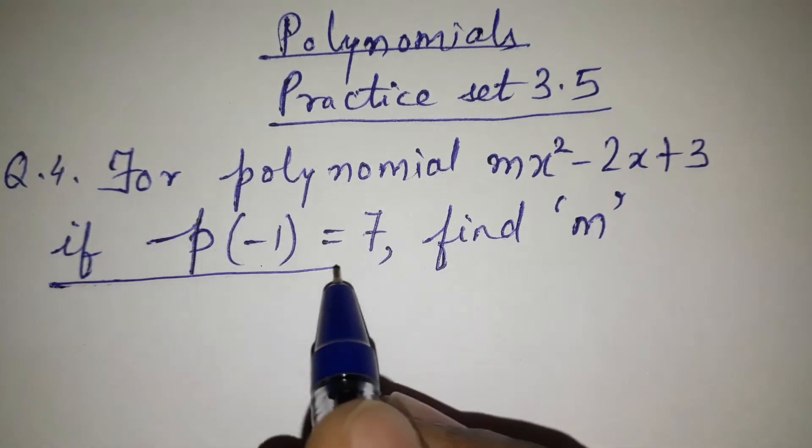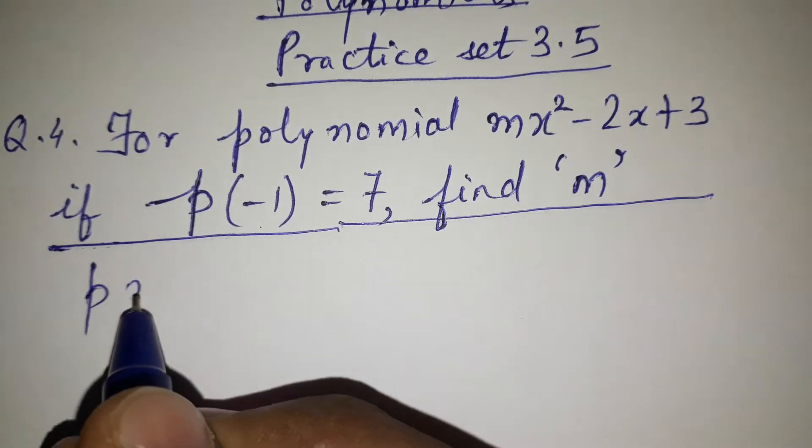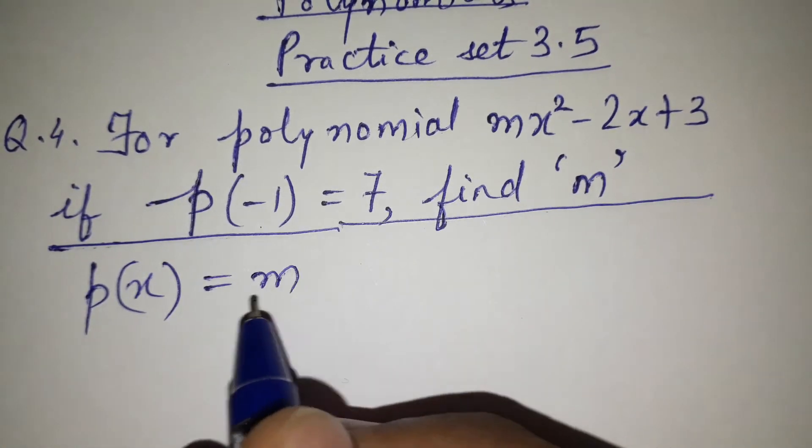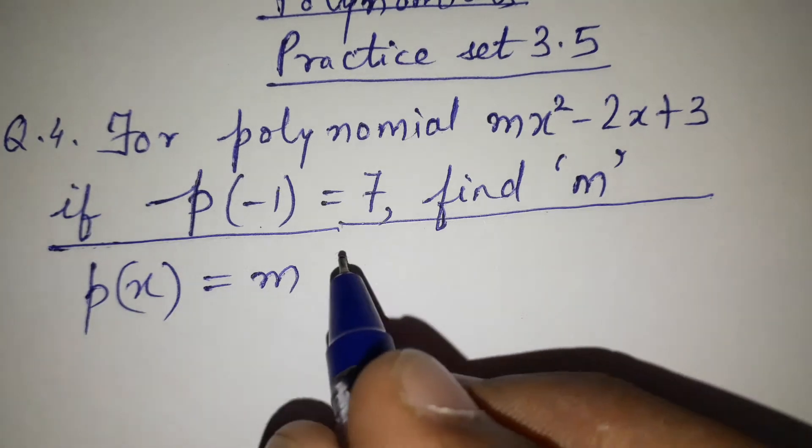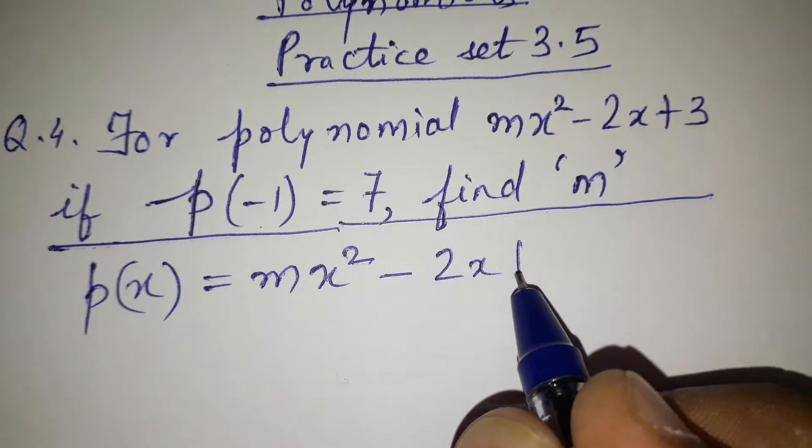Let's start. First we will write the polynomial which has been given: p(x) = mx² - 2x + 3.